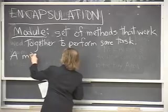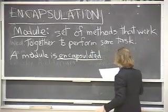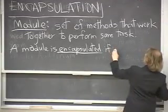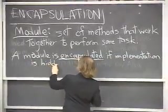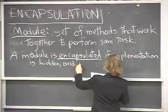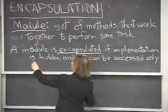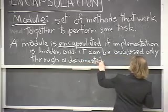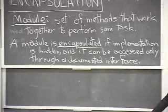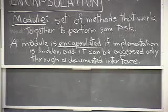So a module is said to be encapsulated if its implementation is completely hidden and it can be accessed only through a documented interface. So these two things together, the hidden implementation and the documented interface, mean that someone can use your module and call your module without having any idea how it works. They know what it does, but they don't know how.